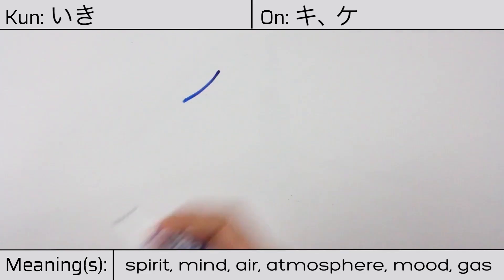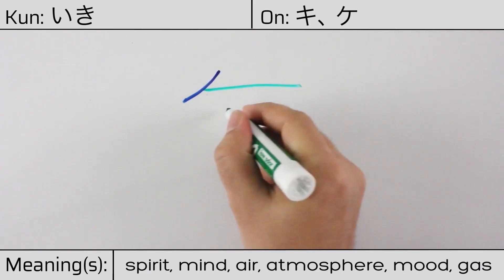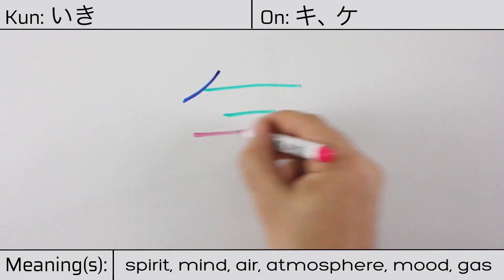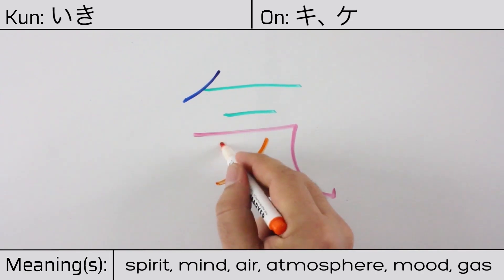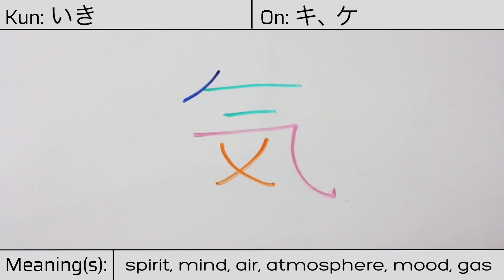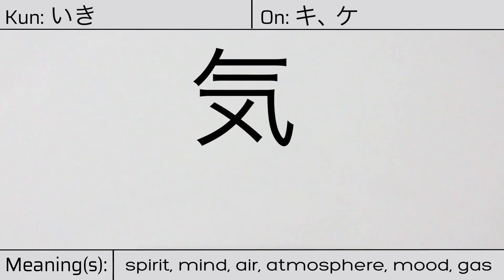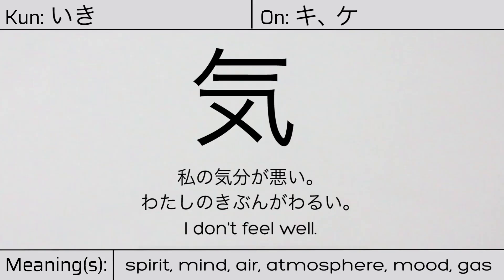This character is made up of the following radicals or parts: steam or breath, followed by a cross pattern at the bottom. You can remember this kanji by the following hint: both spiritual and physical activities require air. Our example sentence is: Watashi no kibun ga warui — I don't feel well.